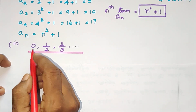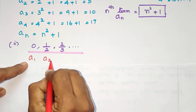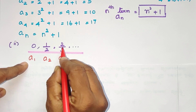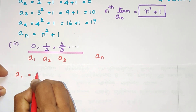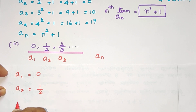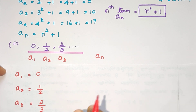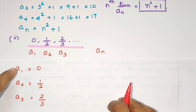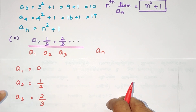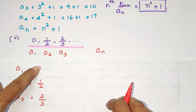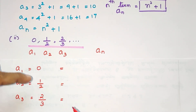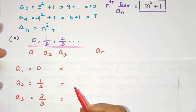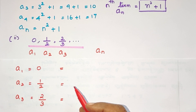In the second sequence, A1 is equal to 0, A2 is equal to 1/2, and A3 is equal to 2/3. So the nth term An starts at 0. A2 = 1/2, A3 = 2/3. We have already introduced this general term idea. Now let's look at the numerator and denominator separately — these are fractions.